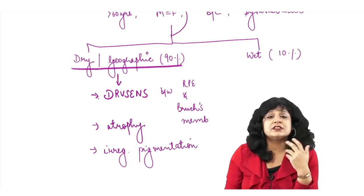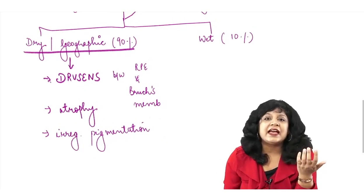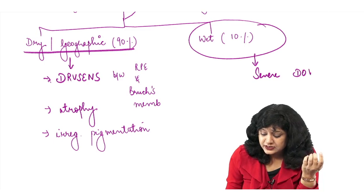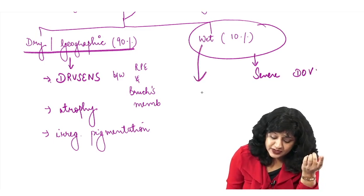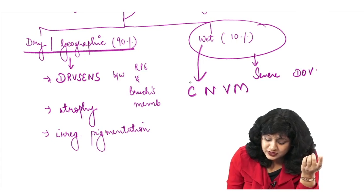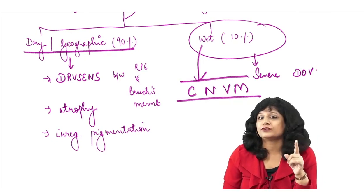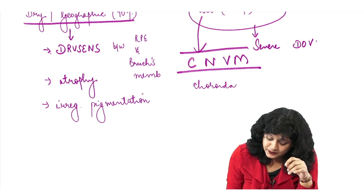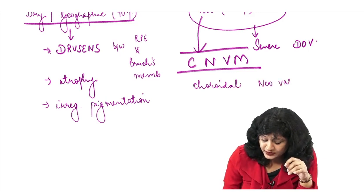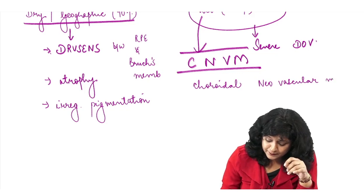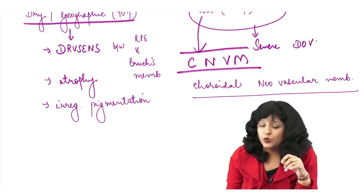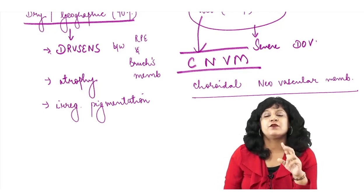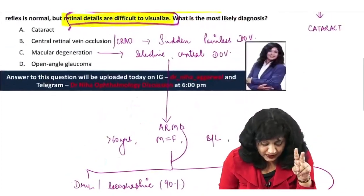Wet ARMD causes severe diminution of vision due to CNVM — choroidal neovascular membrane. This is a key finding in wet ARMD. Since we are not getting evidence of CNVM or severe vision loss characteristic of wet ARMD, this is not macular degeneration.